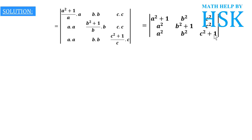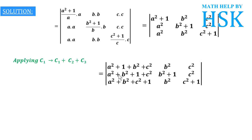Next, I am going to add the elements of column 2 and column 3 to column 1, applying the operation C1 → C1 + C2 + C3. The new column 1 entries become a²+1+b²+c², a²+b²+1+c², and a²+b²+c²+1 respectively, while columns C2 and C3 remain as they are. All three entries in column 1 are equal to a² + b² + c² + 1.